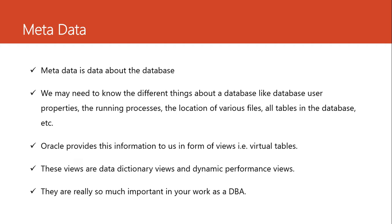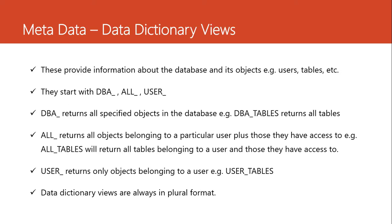Oracle provides this information to us in the form of views. When we start with something like V dollar, we also see things like DBA_USER_TABLES — these are called virtual tables or views. If you're familiar with SQL you may have come across the term views. A view is a virtual table — it is reading information from another table and keeps changing dynamically. We have two types of views in Oracle: the data dictionary views and the dynamic performance views.